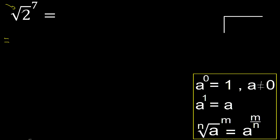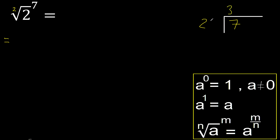Here there is no number, therefore it is 2. 7 is greater, therefore divided by 2. 2 multiplied by which number is nearest to 7 but not greater? Multiplied by 4 is greater. Multiplied by 3 is 6 — okay, it's not greater. Subtract: remainder is 1. Okay, there is no number.